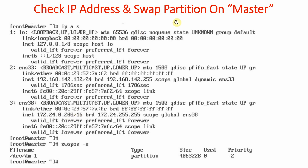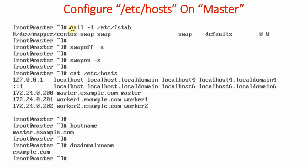Disabling the swap partition is a must for implementing Kubernetes. With 'swapon -s' we can check the status — one swap partition is present. To disable it, we open the file '/etc/fstab' because all partition information is in this file. There we find the line 'dev/mapper/...' for the swap partition, and we are going to comment out that line to disable it.